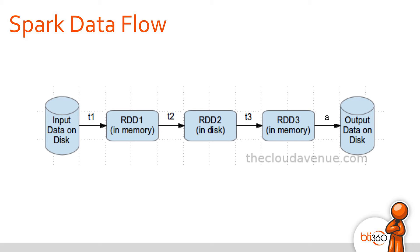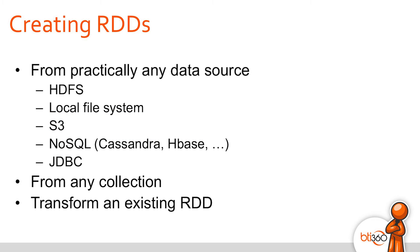Between each RDD is a transformation, T1 through T3. At the end you'll see an action A — at the point of that action is when the data pipeline is actually executed. Spark makes it easy to get data into an RDD from practically any data source: HDFS, local file system, S3, Cassandra, HBase, JDBC. You can also create an RDD from an existing collection by making it a parallel collection, or by transforming an existing RDD.